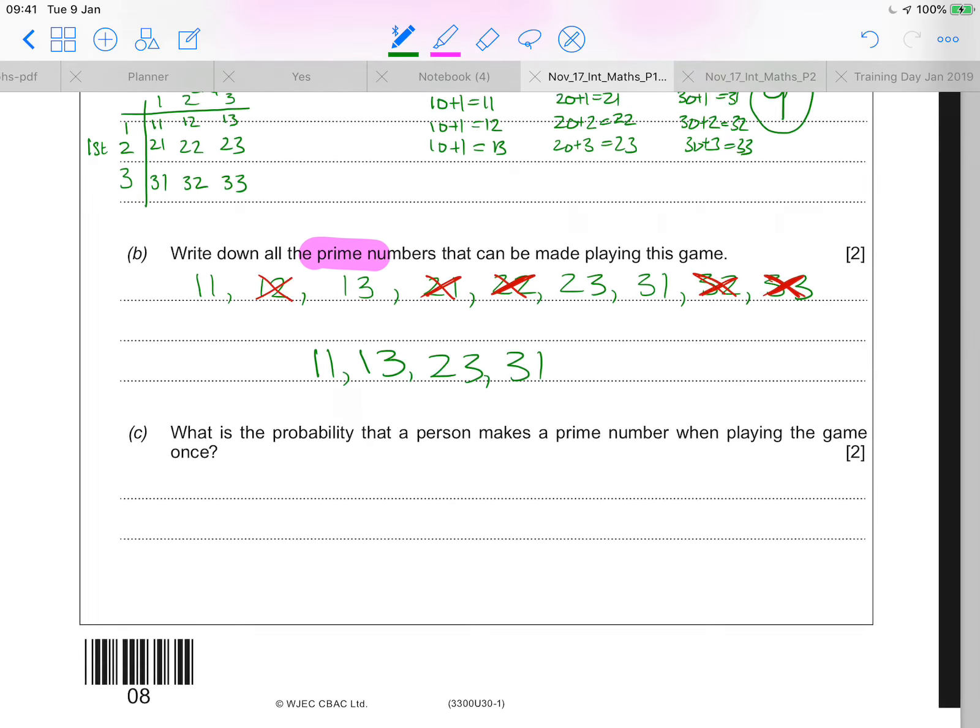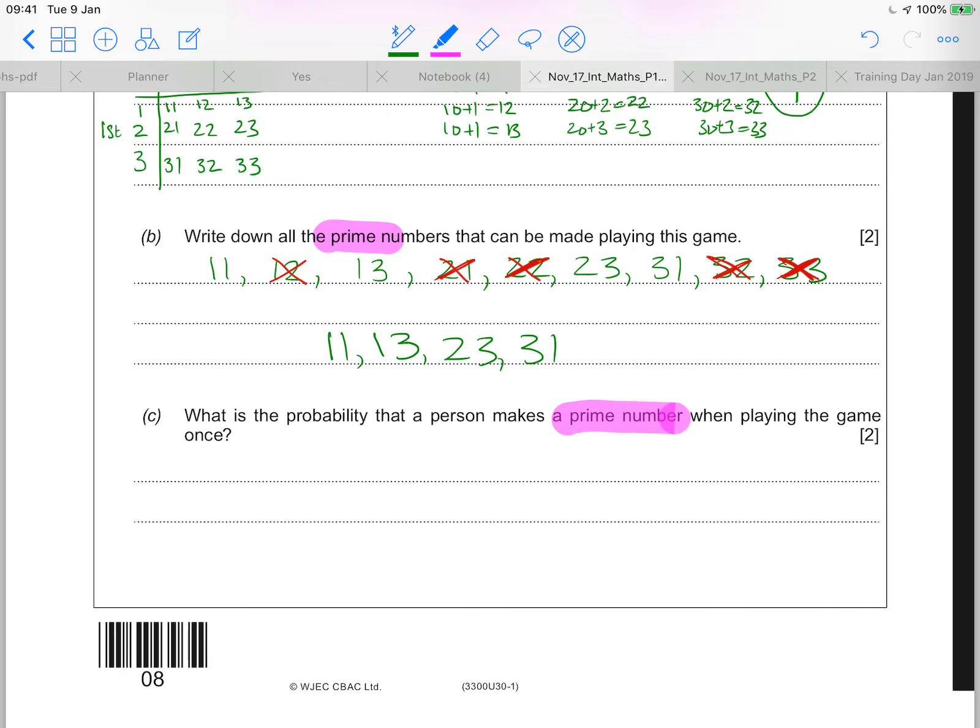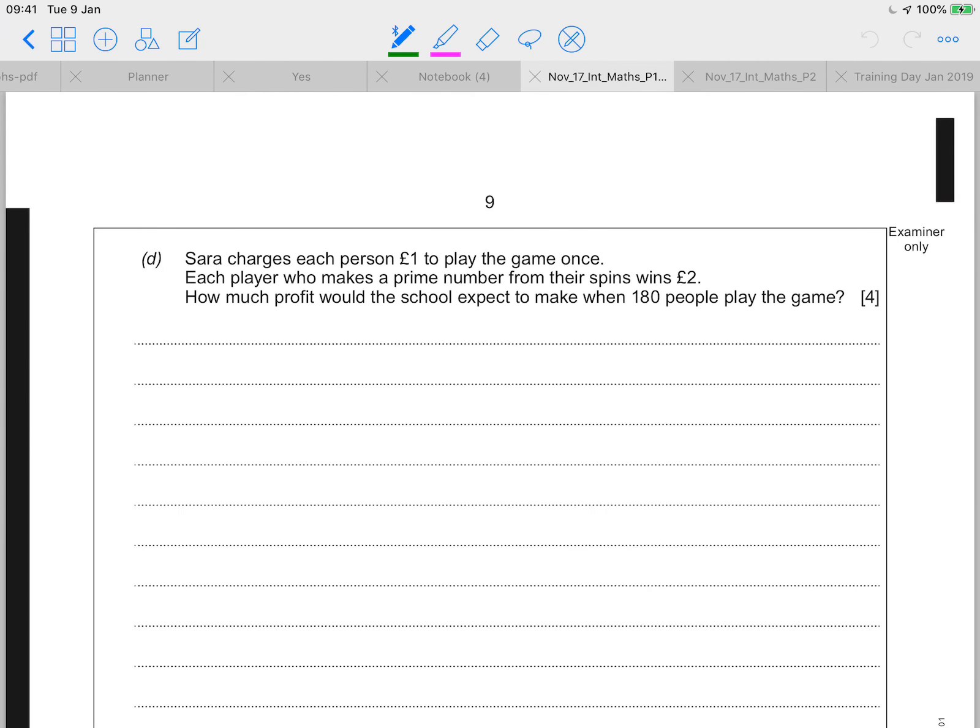Part C says what's the probability of a person picking a prime number when they play the game? Well, I now know from part A that there were nine different numbers available. And from part B that four of them were prime. So the probability of the person picking a prime number would be four out of nine. And then on part D over here, it tells me that Sarah charges each person one pound to play. And each player who makes a prime number will get two pound for a prize. How much profit would the school expect if 180 people play the game?